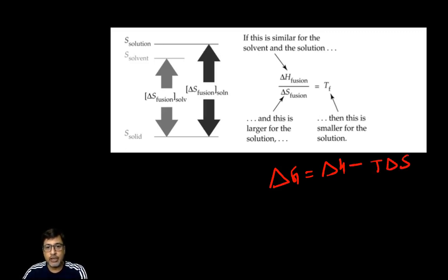At equilibrium, the value of delta G becomes zero. So here, the freezing point Tf can be written as delta H upon delta S.